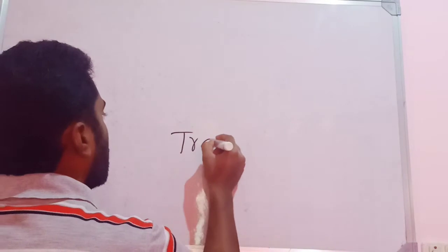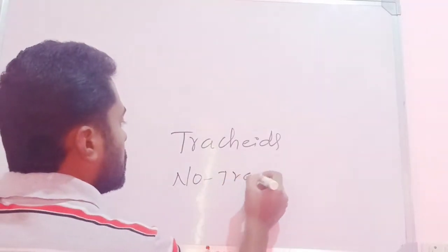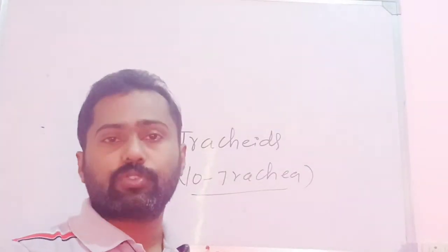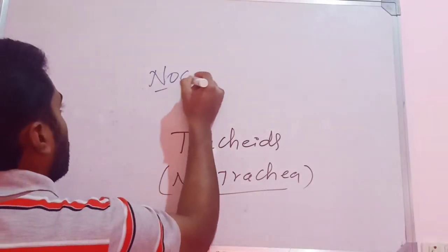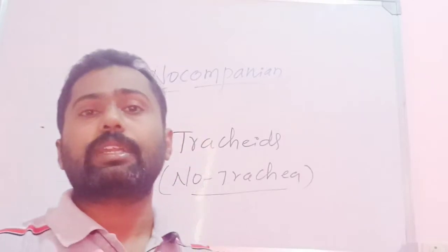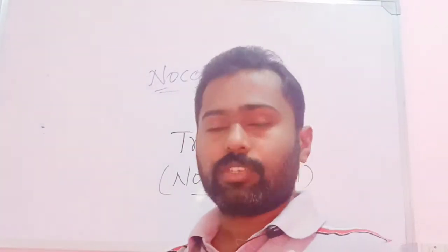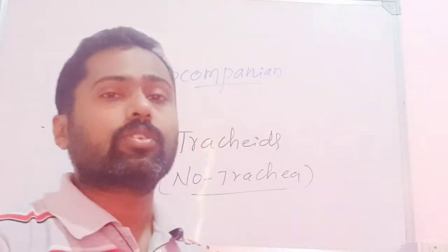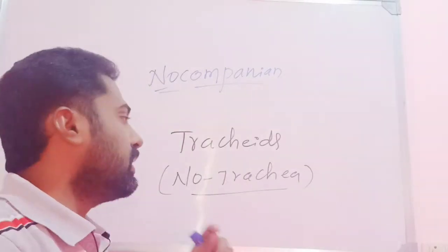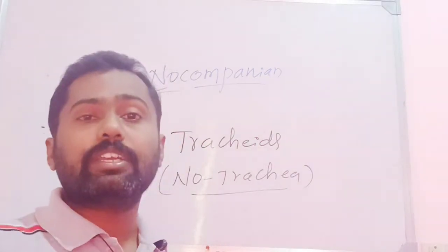The xylem of pteridophytes has only tracheids — there is no trachea or vessels. Similarly, the phloem has only sieve tubes; there are no companion cells. Remember the four components of xylem: xylem parenchyma, xylem fibers, xylem tracheids, and trachea. And the four components of phloem: phloem parenchyma, phloem fibers, sieve elements, and companion cells. In pteridophytes, companion cells are absent in phloem and trachea is absent in xylem.